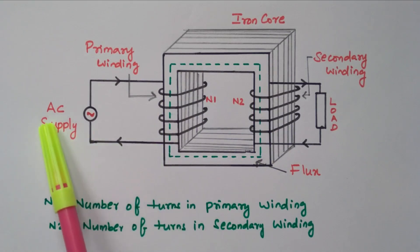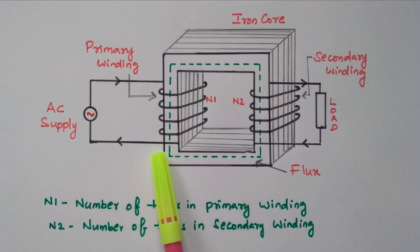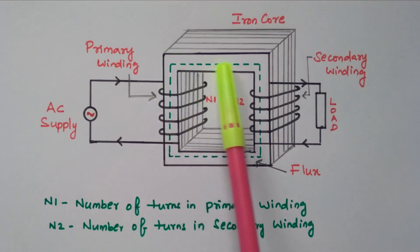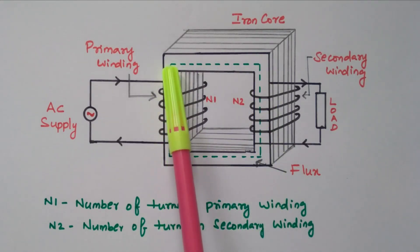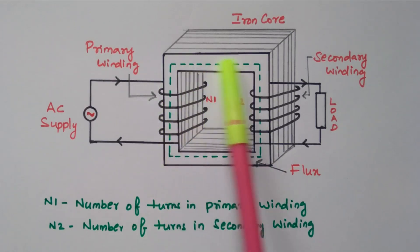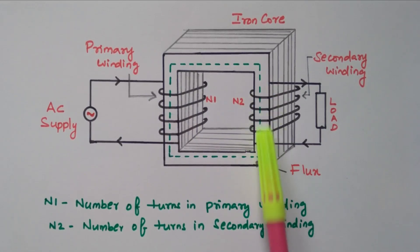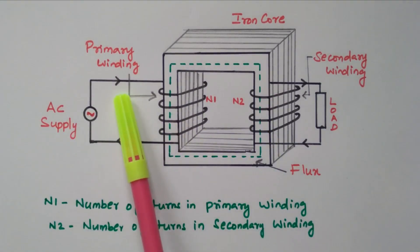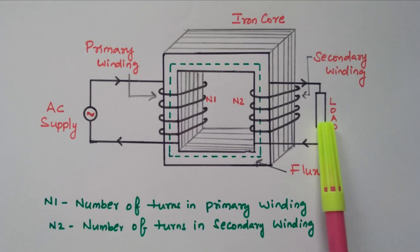When AC supply is given to the primary winding, alternating current flows through it. Due to the alternating current, alternating flux is produced in the primary winding. Due to the square iron core, the flux flows along the shape of the iron core through the entire core. This flux links with the secondary winding. Since the flux is alternating, there is a rate of change of flux, and as a result an EMF is induced in the secondary winding.